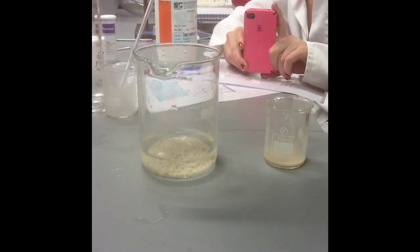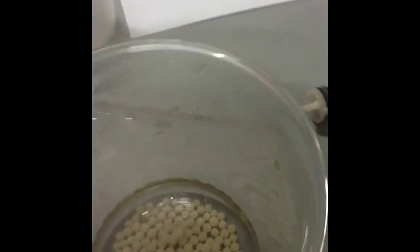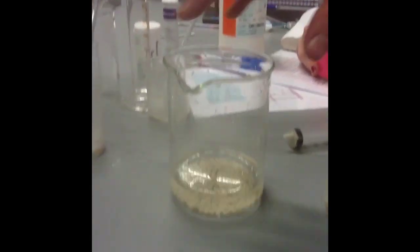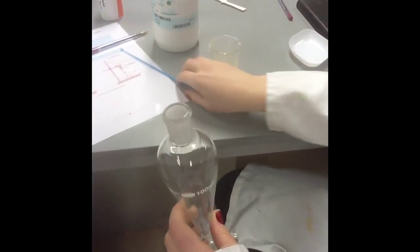While the beads are left to harden, it's important that we create an enzyme which is not immobilized. To do this, we must mix 2g of yeast in 10ml of distilled water and then add this yeast suspension into a separating funnel labeled free yeast.